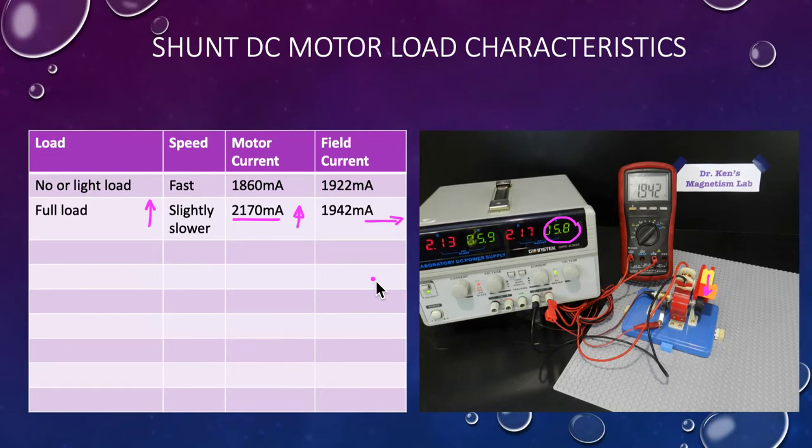As you can see, it's the armature current that's got to increase, not the field current. And you'll also note that we've gone slightly slower. It did go slower, but nowhere near as slow as the series one. So by putting our field in shunt, we're getting a better speed response.